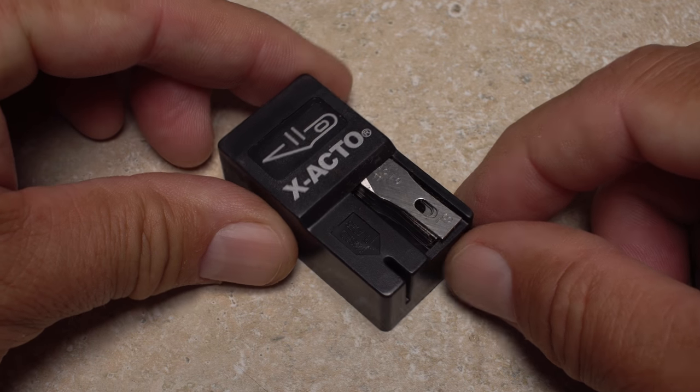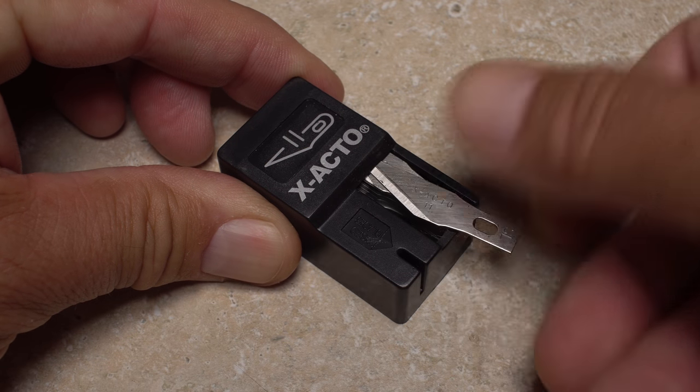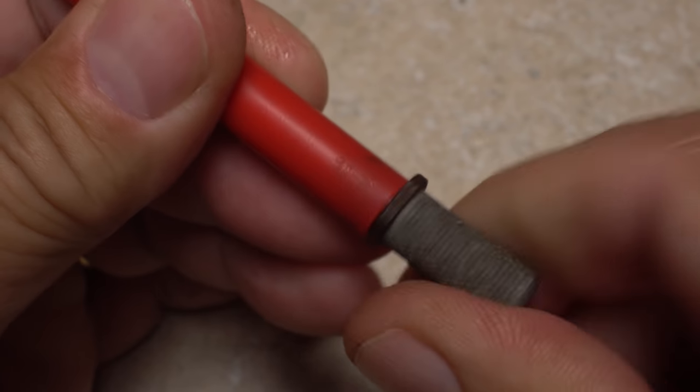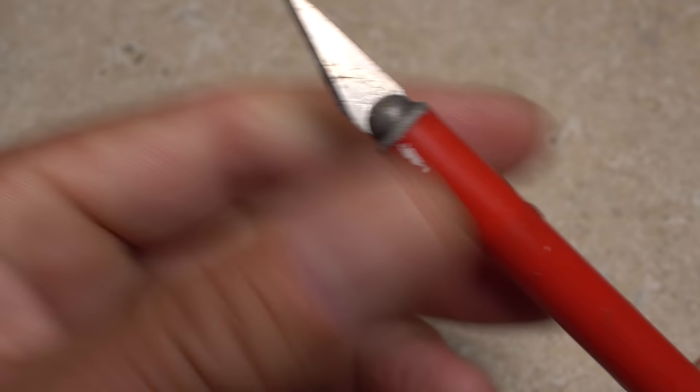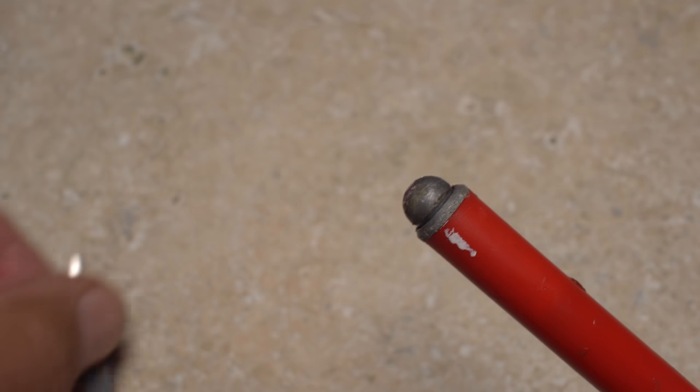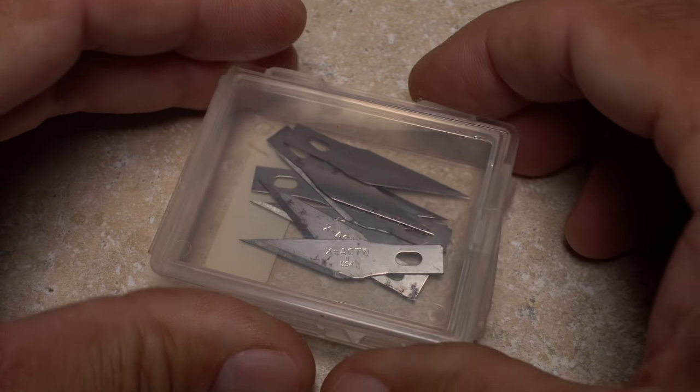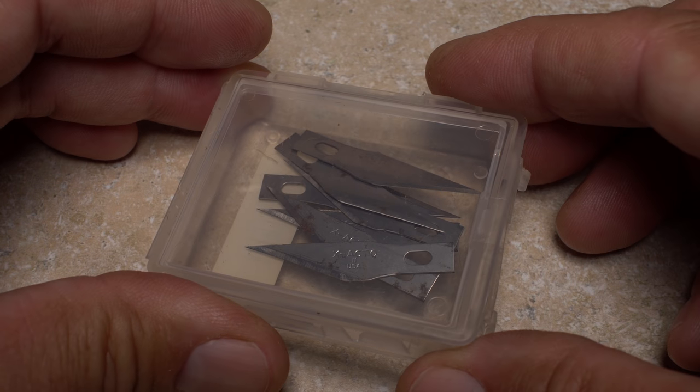Replacement blades, especially when bought in bulk, really aren't that expensive, so it's worth making a change when you need to. On most knives, just twist the rear handle to open the jaws and release the blade. I keep these slightly used blades for less delicate tasks. An empty hook box is a great way to store them.